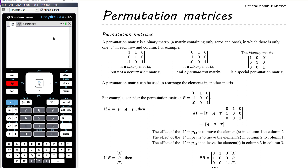Today we're going to talk about permutation matrices — a specific type of matrix. Permutation is another word for rearrangement, so these are matrices used to rearrange or reorganize other matrices. A permutation matrix is a binary matrix — it only has zeros and ones — and there is only one instance of the number one in each row and column.